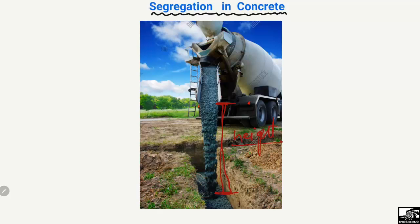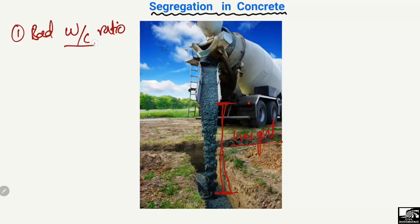To avoid segregation, the first factor to consider is a bad or improper water-to-cement ratio. If the water-to-cement ratio is too high, there are more chances of segregation. We should take care of the water-to-cement ratio in our design mix in order to avoid segregation of the concrete.